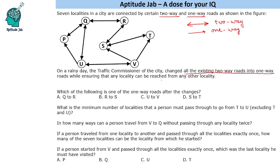All these places can be reached from one another, which means that for every point there should be an incoming as well as an outgoing route. Let us start with V because it has the most number of routes. The existing routes from V are outgoing, so a person can go out from V but cannot come to V. This means U to V should be an incoming route, so that a person can come to V and then go to these places.